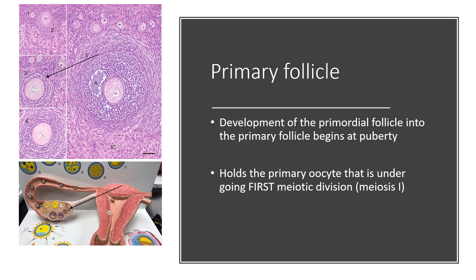Once a female hits puberty, those primordial follicles begin to further undergo the first meiotic division. When it's undergoing the first meiotic phase, it's called a primary oocyte, and it's encapsulated by the primary follicle. You can see it pointed out in the microscope slide here, as well as on the model.